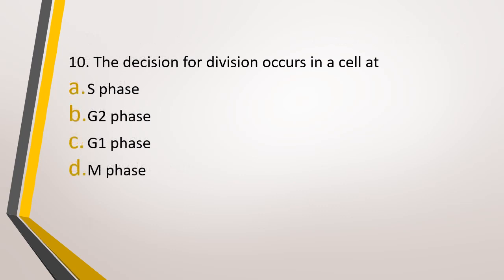Question number 10. The decision for cell division occurs in a cell at, option A: S phase, option B: G2 phase, option C: G1 phase, or option D: M phase. The correct answer is option C, that is, it decides in G1 phase that it has to divide. And what happens in S phase? Right, the replication of the DNA starts in the S phase.